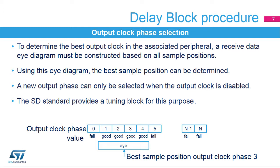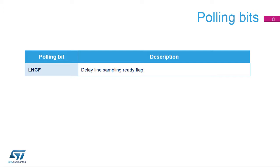The SD specification provides a special tuning block to tune the received data sample point. Following a unit delay update in the unit field, the LNG F flag informs the firmware that the delay line sampling has finished, and the delay length feedback can be read from bits LNG 11 to 0.